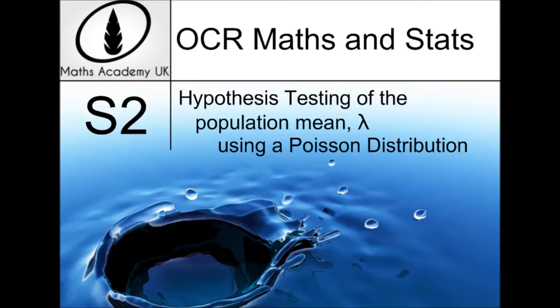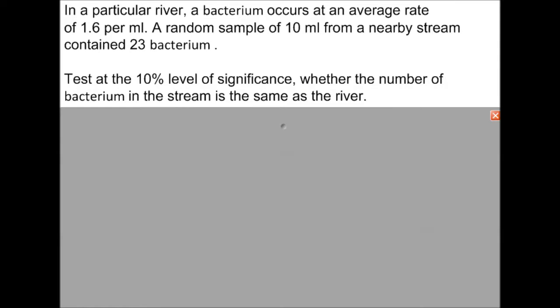Hypothesis testing of the population mean using a Poisson distribution. In a particular river, a bacterium occurs at an average rate of 1.6 per milliliter. So this is our lambda value, and it's 1.6 for 1 milliliter. A random sample of 10 milliliters is taken from a nearby stream.